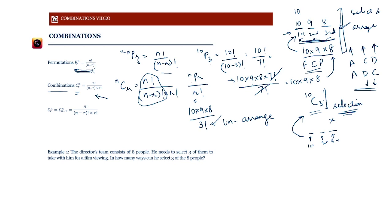Let's calculate 10C3. Using the formula, it is n! / ((n−r)! × r!), which gives 10! / (7! × 3!). This simplifies to (10 × 9 × 8) / 3!. The formula may look a little complicated, but once you start using it, it is extremely simple.